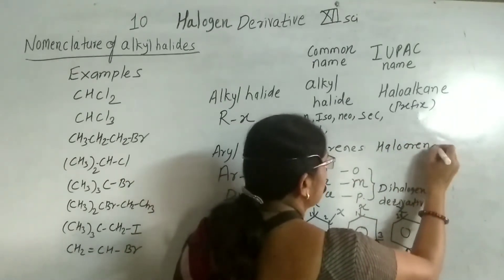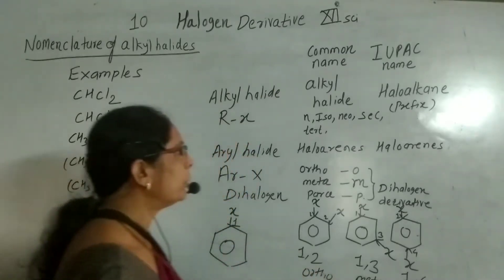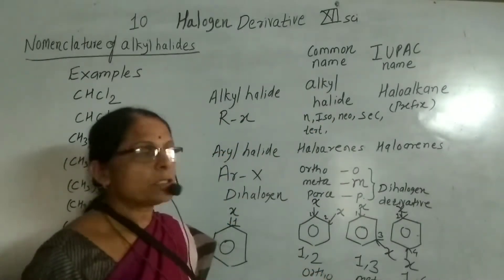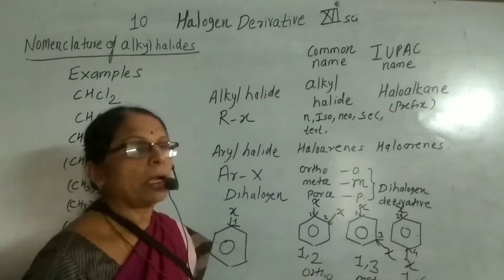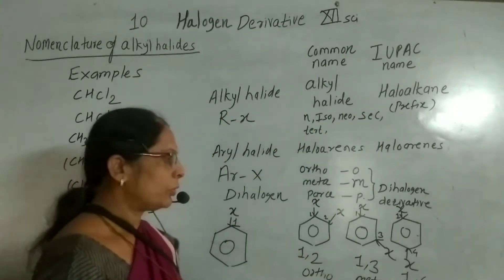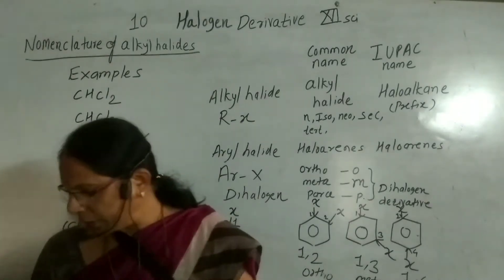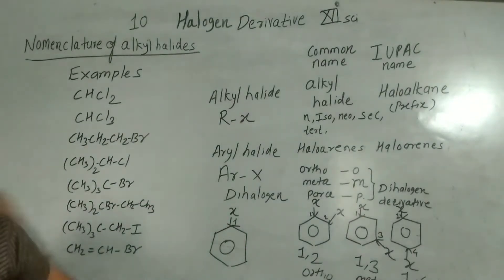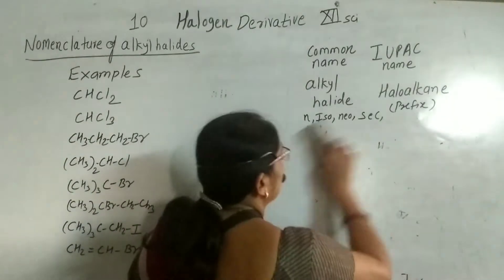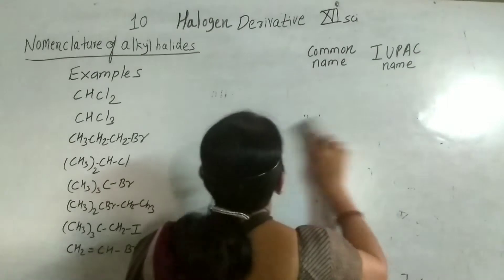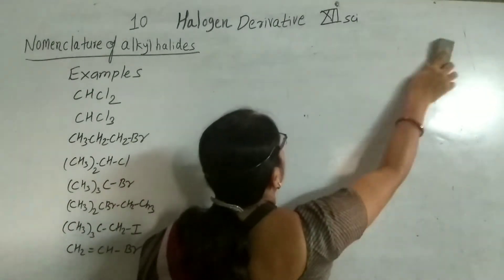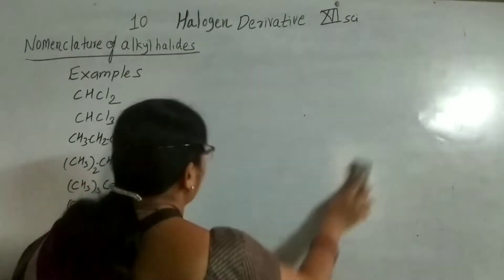So haloarene is the IUPAC name of the aryl halide — the aromatic halide — and haloalkane is the IUPAC name of the alkyl halide — the aliphatic halide. Now let us consider examples in detail. We start with the simple common and IUPAC names of these alkyl and aryl halides.